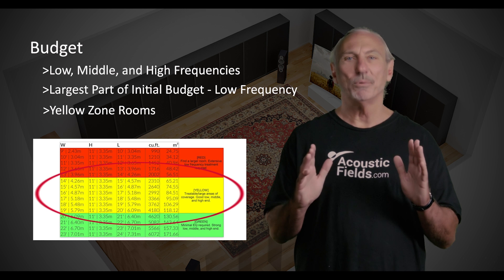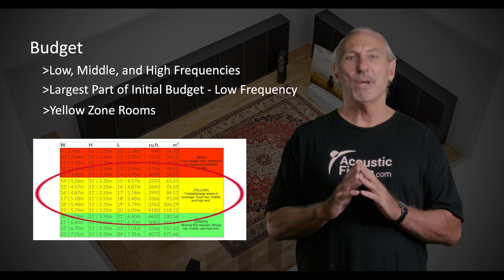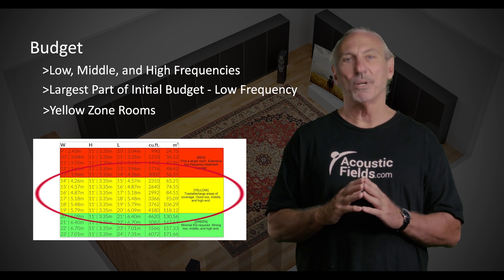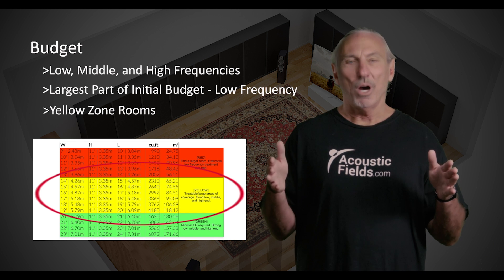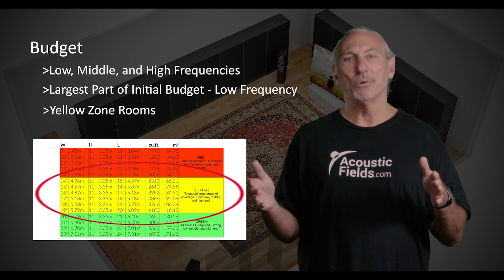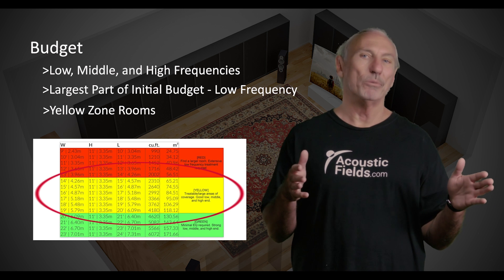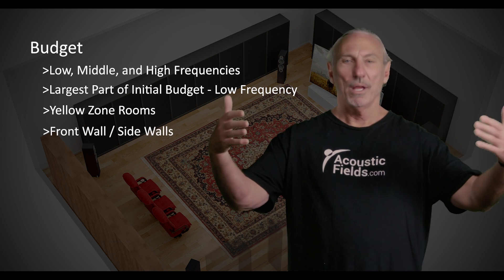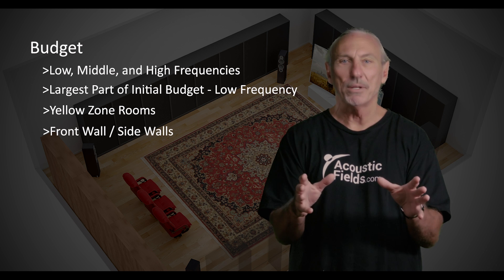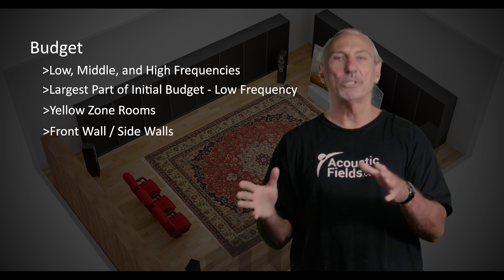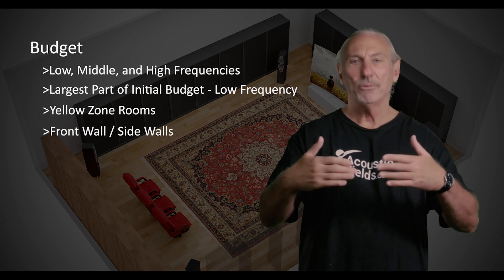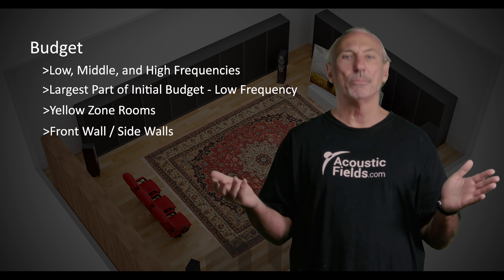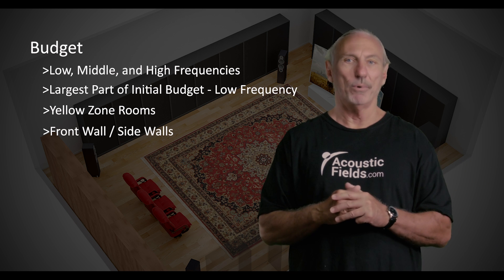If you have a room in the yellow zone, the first thing we have to do in all rooms is address low frequency management. Our costs are based on where the problems are located in the room. In yellow zone rooms, it's always the front wall and the two side walls closest to the source — whether it's a digital audio workstation, a two-channel listening room, or whatever the source of energy is. The boundary surfaces close to the source produce the highest pressure: side walls and front wall.